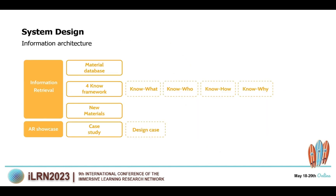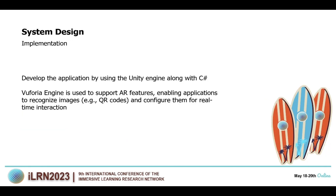This system consists of two main functions: information retrieval and AR showcase. We collect material information from publications and official institutions and then sort them within the 4-0 framework. We also provide some new materials, including those not yet developed in bulk, where the AR showcase demonstrates some material case studies.